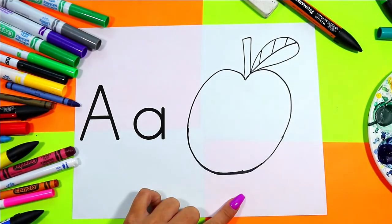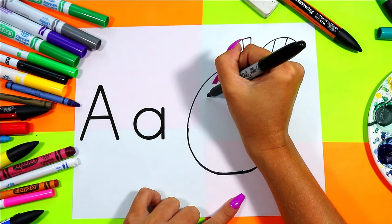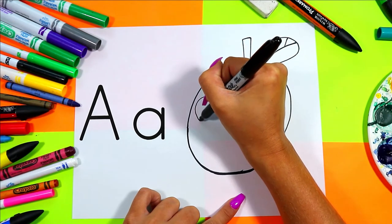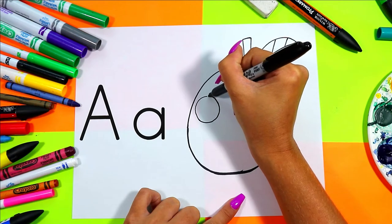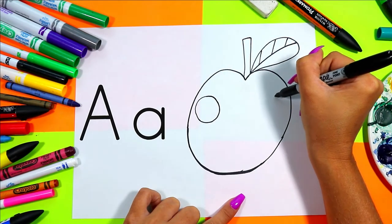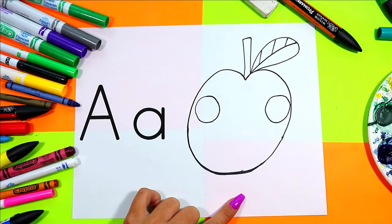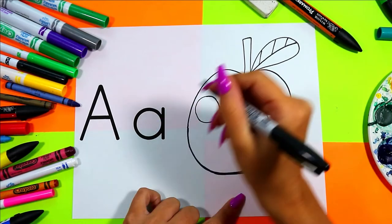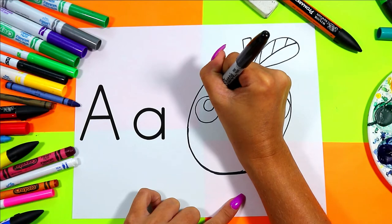Next we're going to draw a face on our apple. We're going to draw one circle on one side of our apple and one circle on the other side of our apple. In each circle draw a smaller circle.